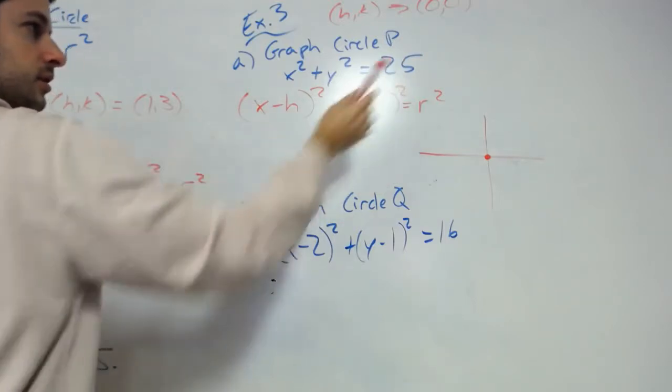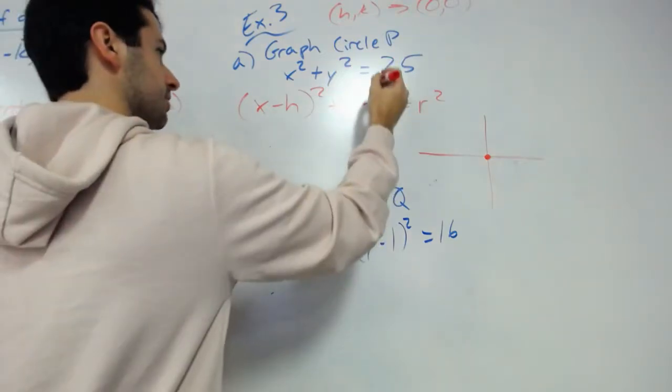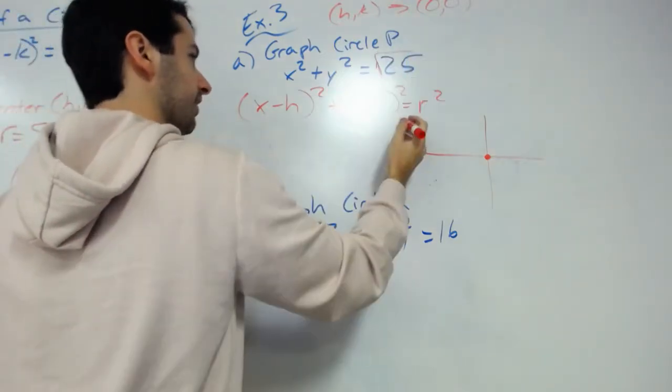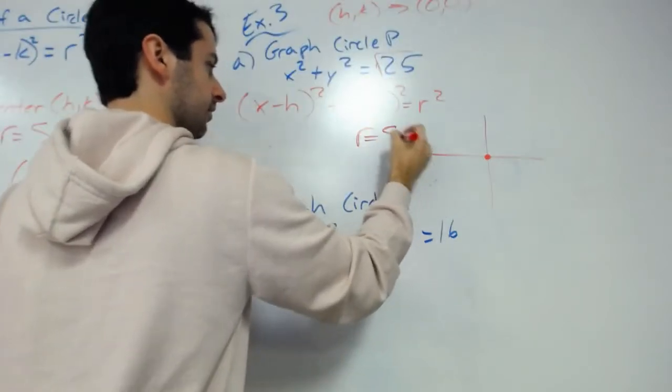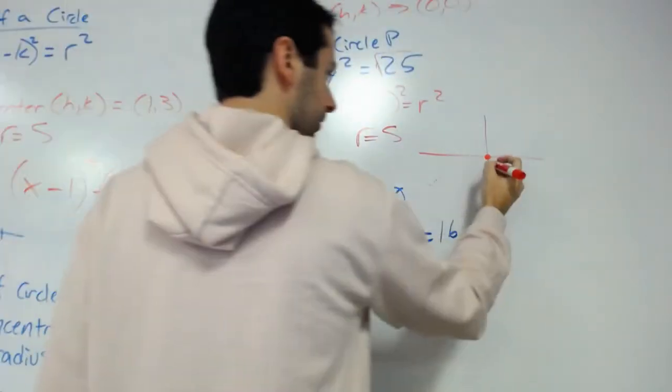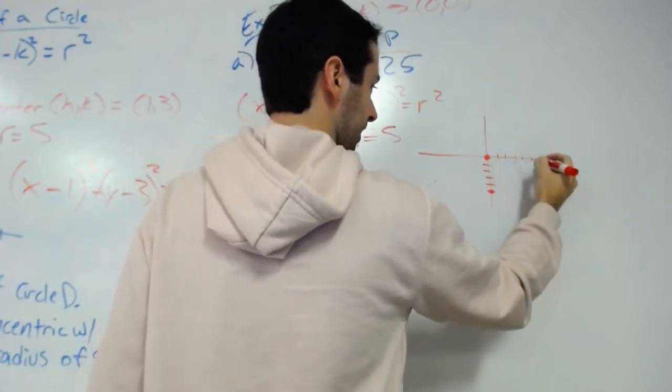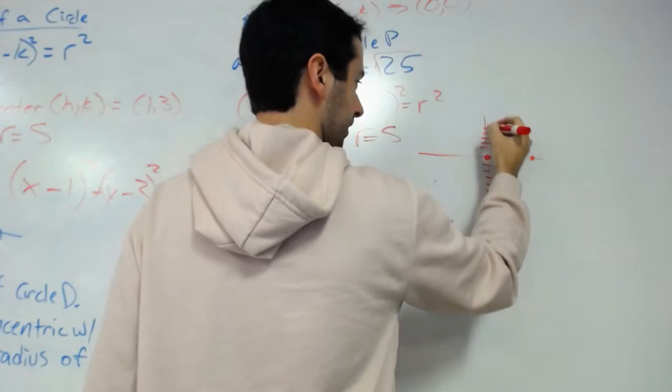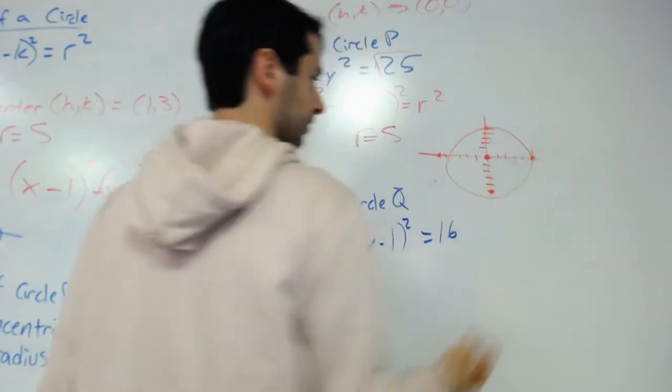25 is not the radius, 25 is the radius squared. So we need to square root 25, making our radius 5. From here we can just count 1, 2, 3, 4, 5, and as best as you can draw your circle.